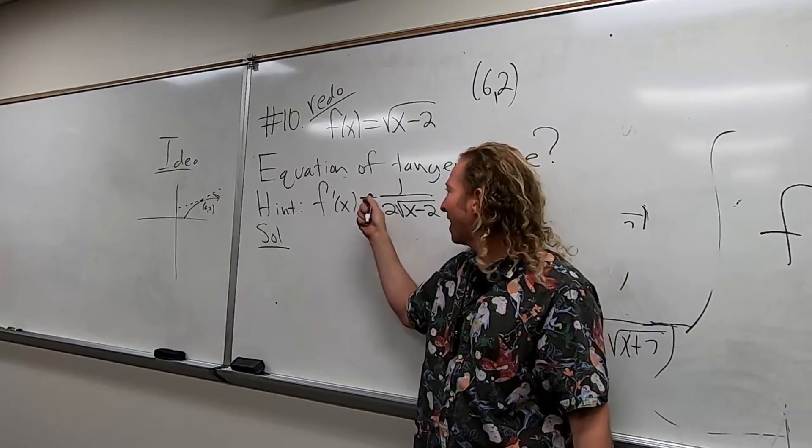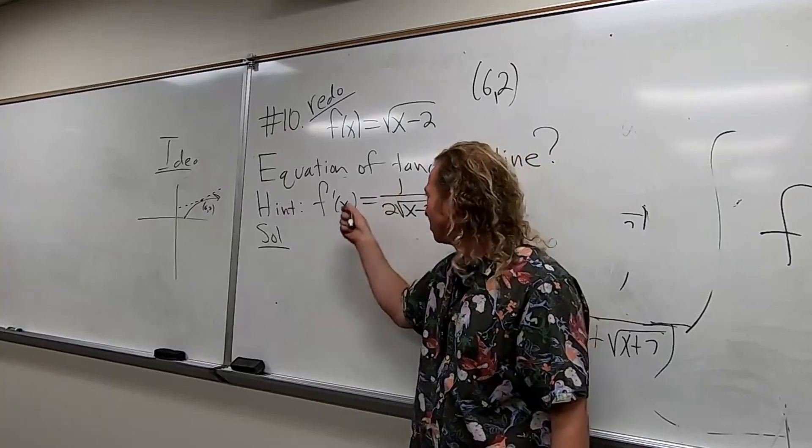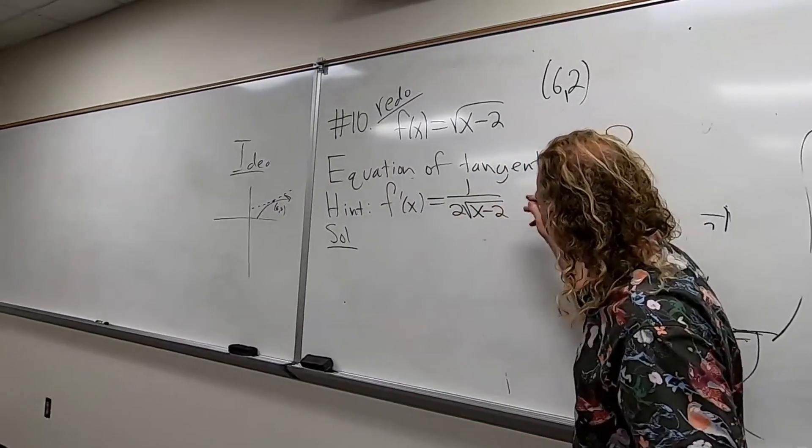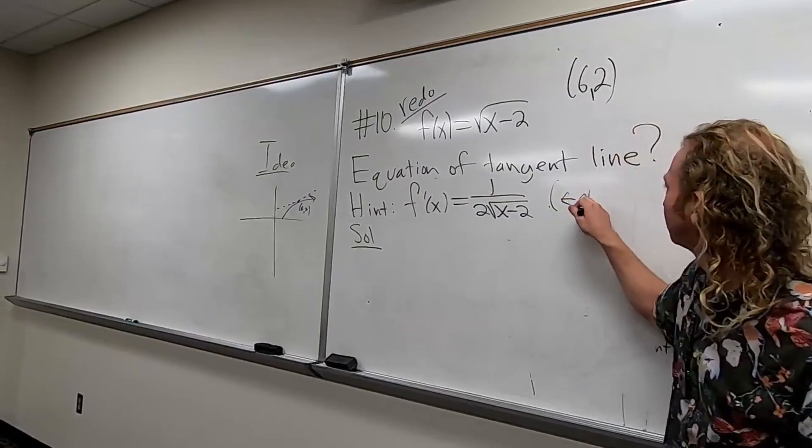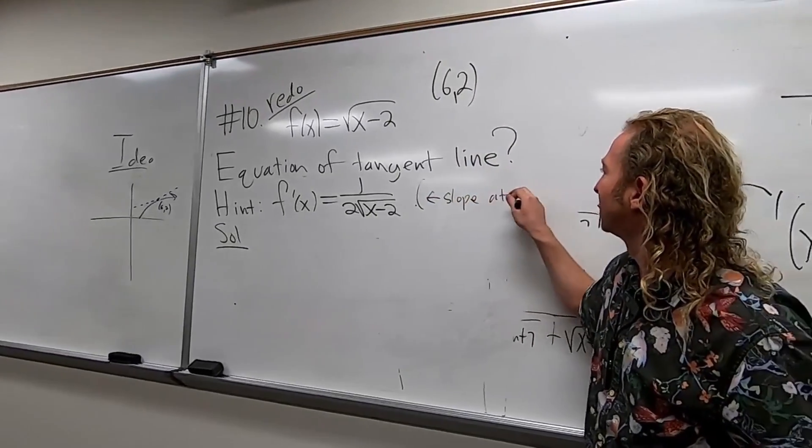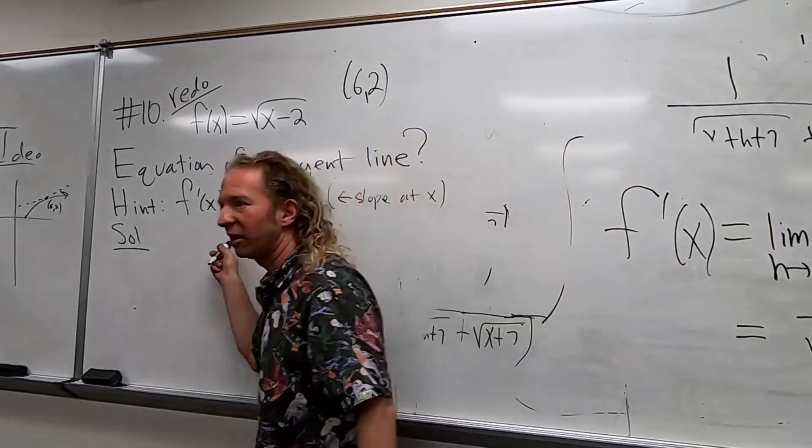So this is the slope at x, right? This is the slope at x. That's what this is, right? Of the tangent line.